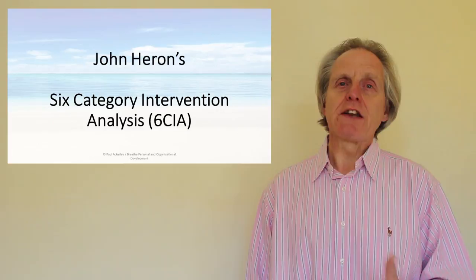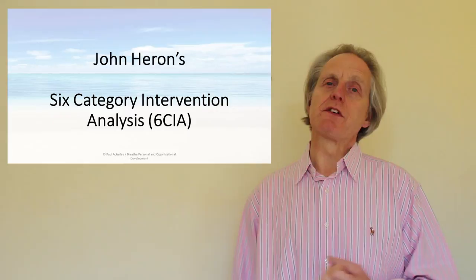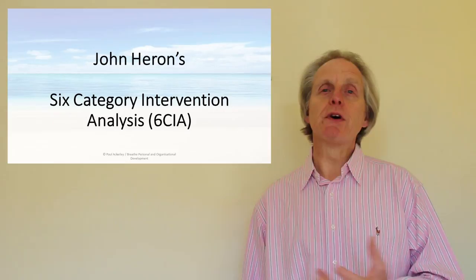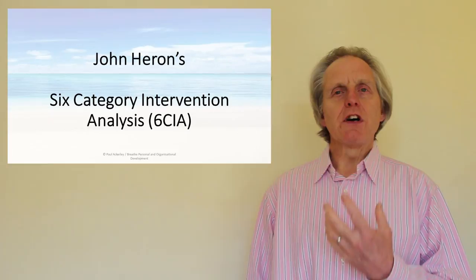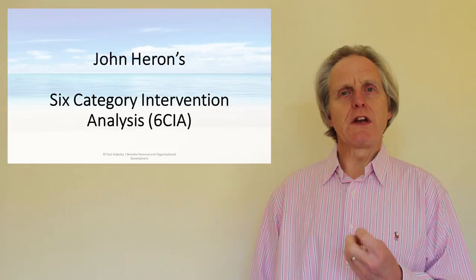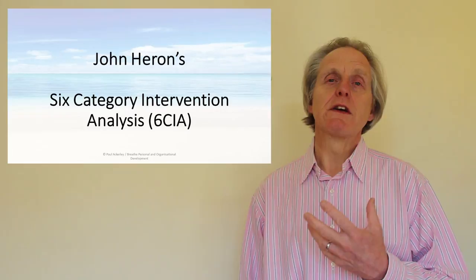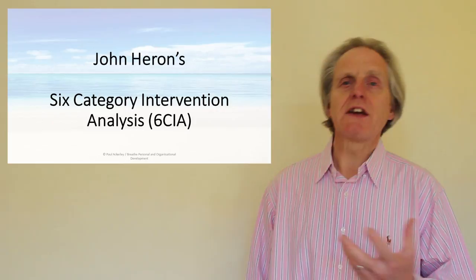So there are six categories that John Heron was talking about, and he decided that every helpful intervention fitted into one of these six categories. Anything that falls outside of those six categories is degenerate — it doesn't help, either through a person's lack of skill or an intention not to help the relationship. Every time you converse, you consciously or unconsciously choose to use one of these interventions. The analysis part is that you can use the six interventions to analyze how effective you are in different situations — do you rely heavily on one, or hardly ever use another?